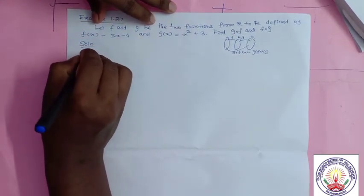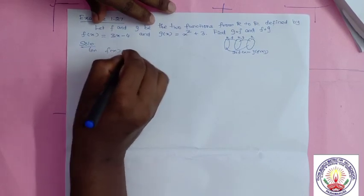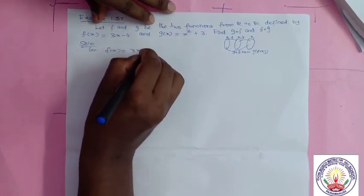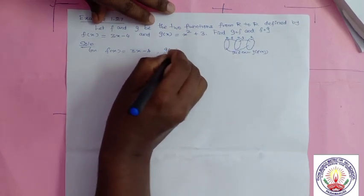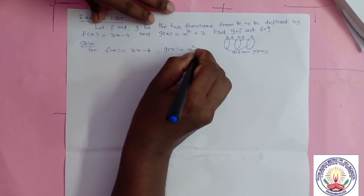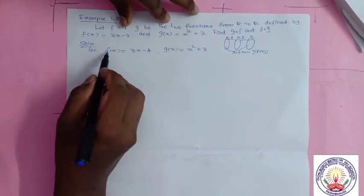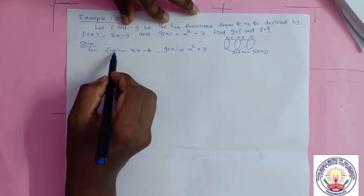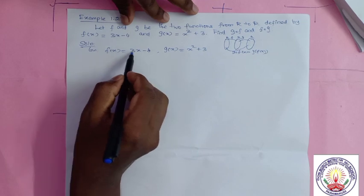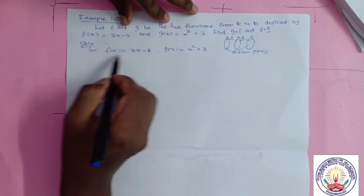Given: f(x) = 3x - 4 and g(x) = x² + 3. The first thing you have to understand — what is the function f? Whatever you give, f will multiply by 3 then subtract 4. If it is x, 3x minus 4. If it is y, 3y minus 4.